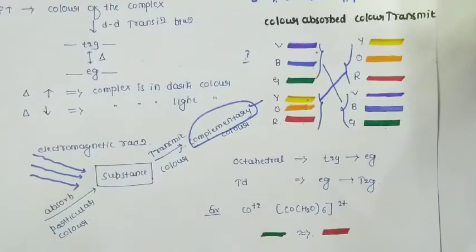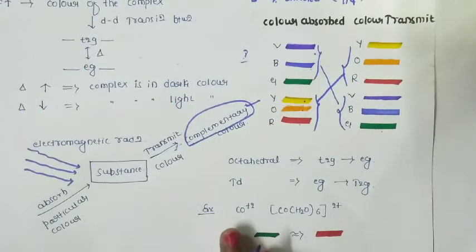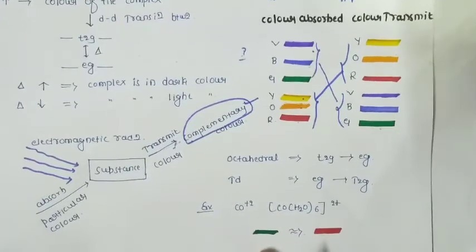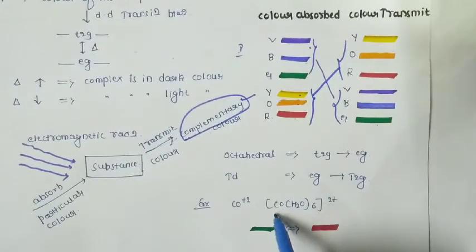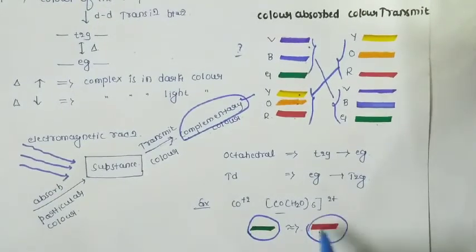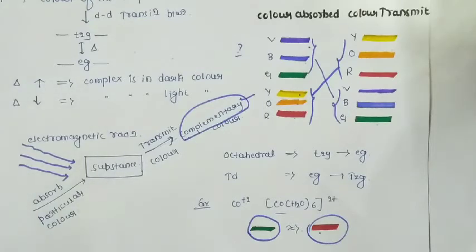Here's an example: in the case of cobalt plus two in the presence of hexaaqua cobalt plus two complex, the cobalt absorbs green color and transmits red color, demonstrating the complementary color principle.